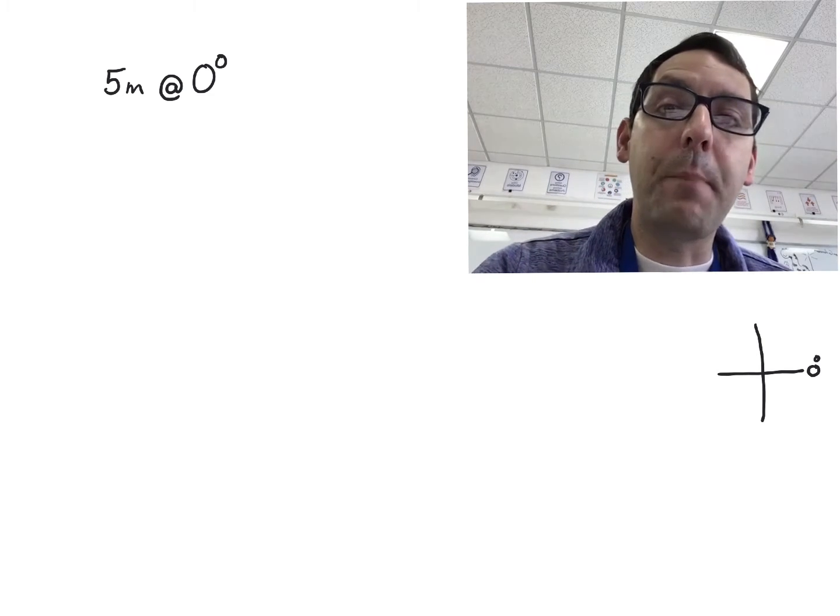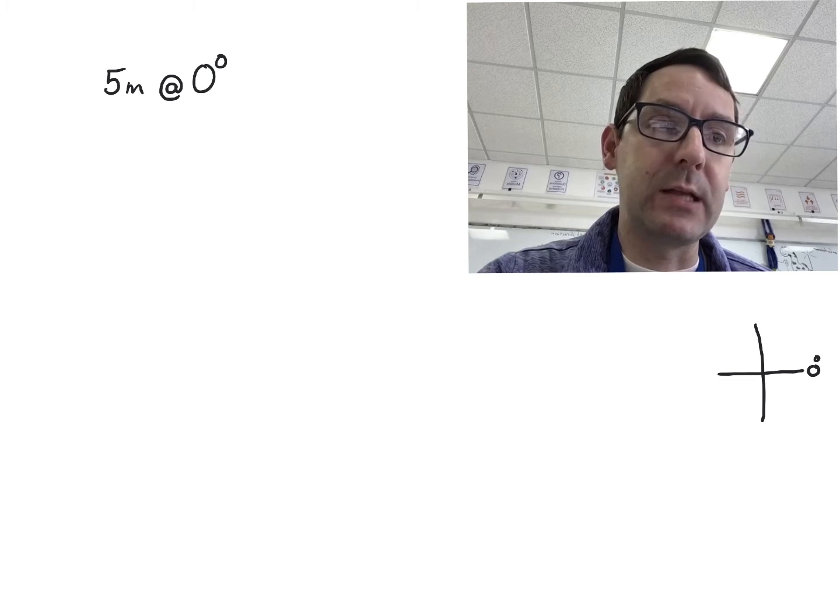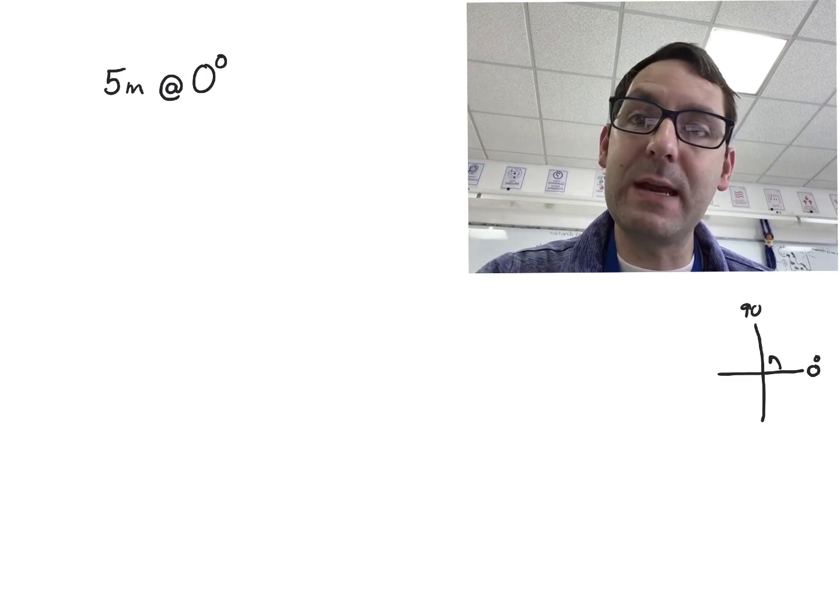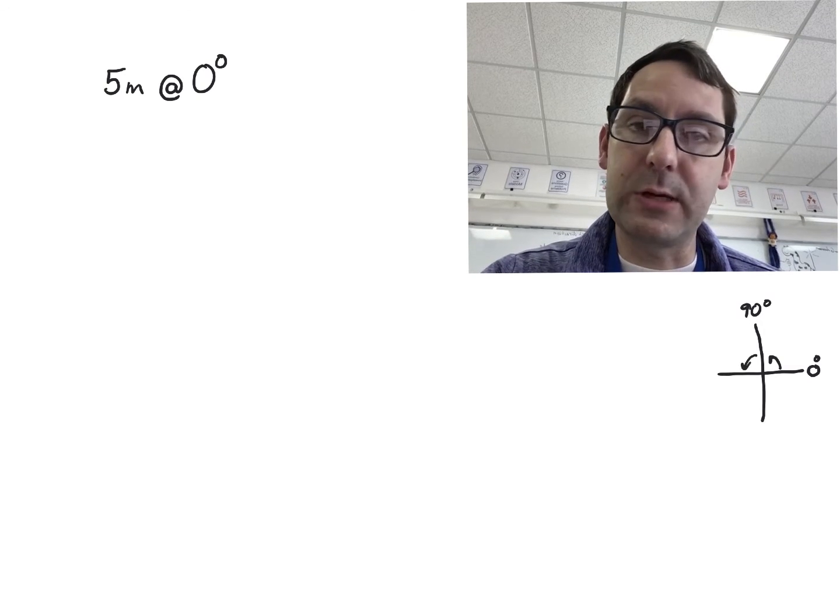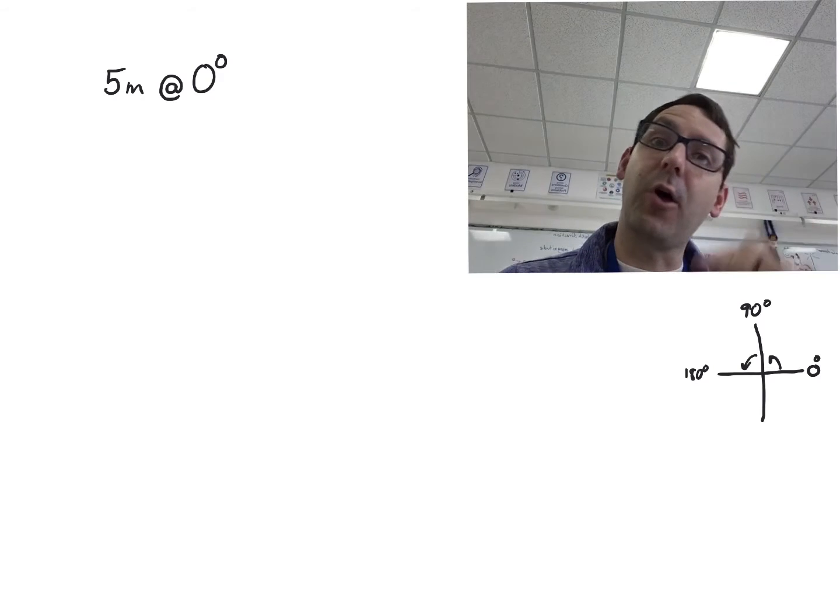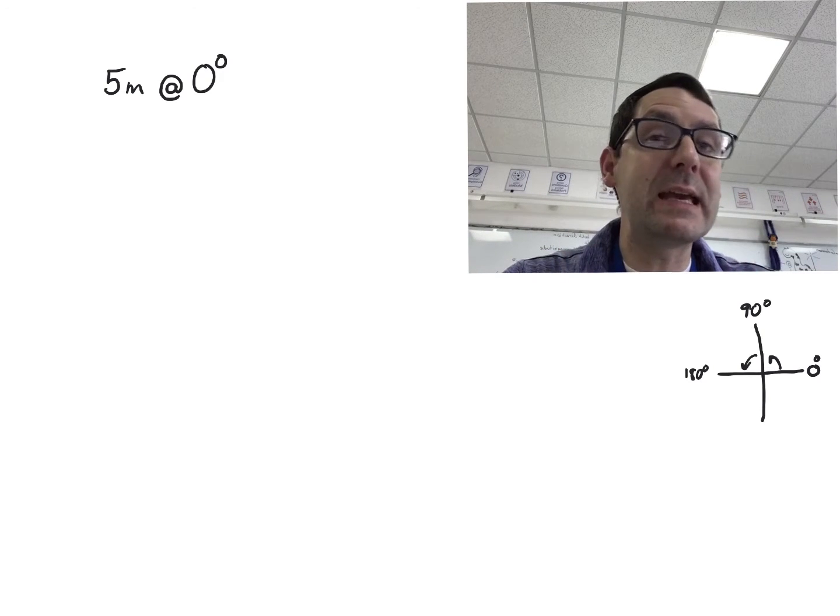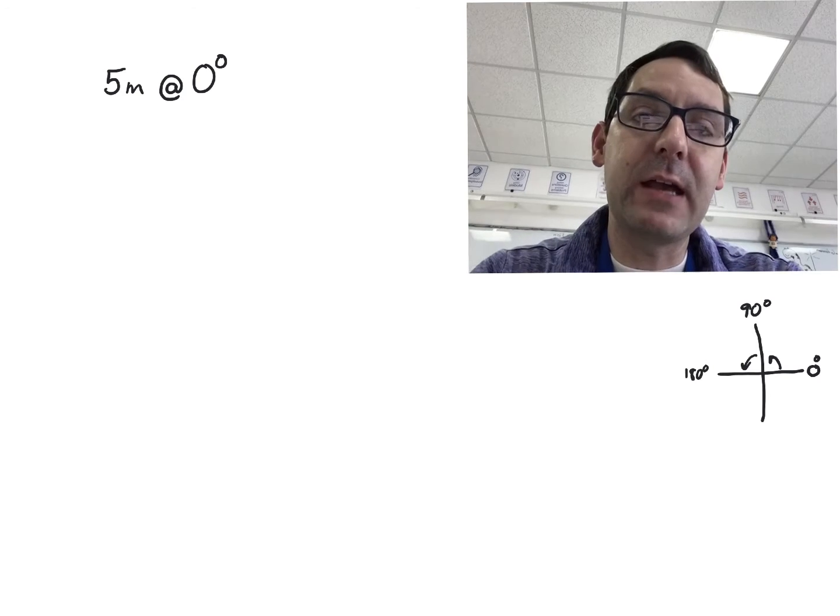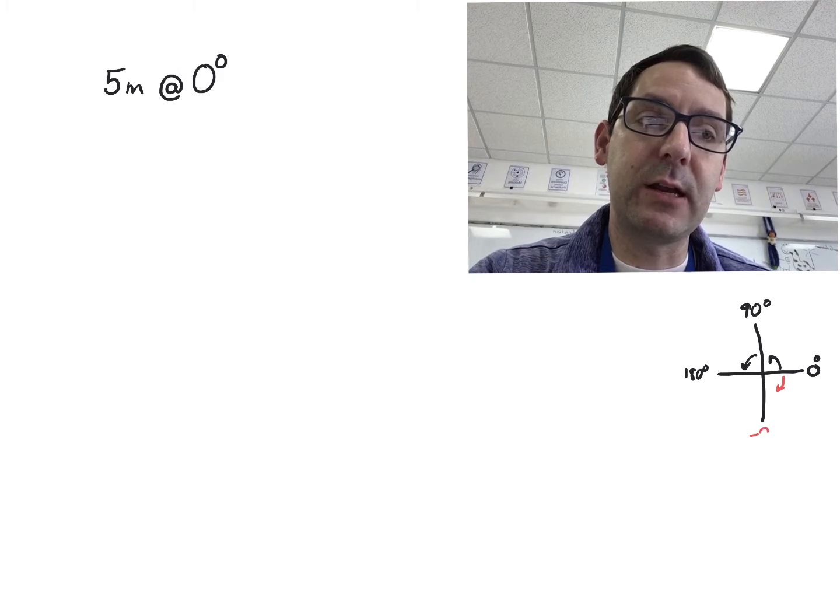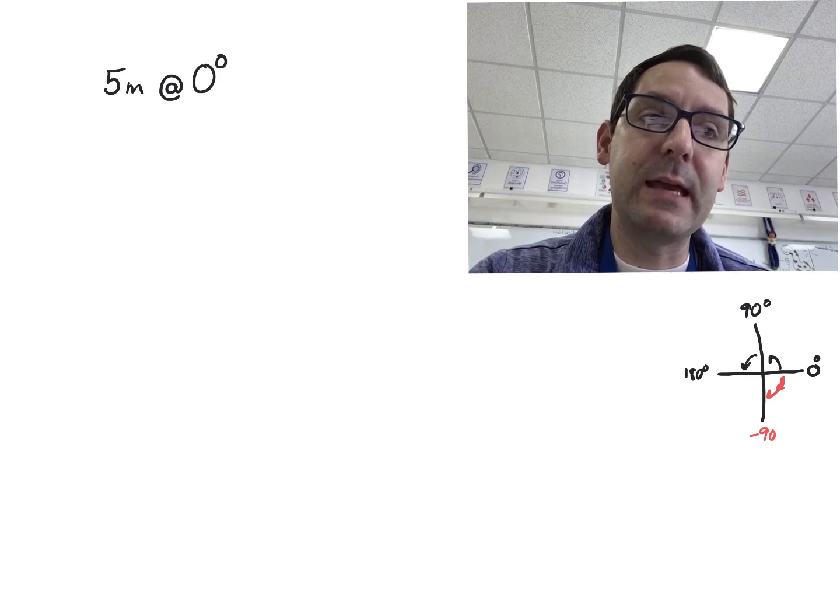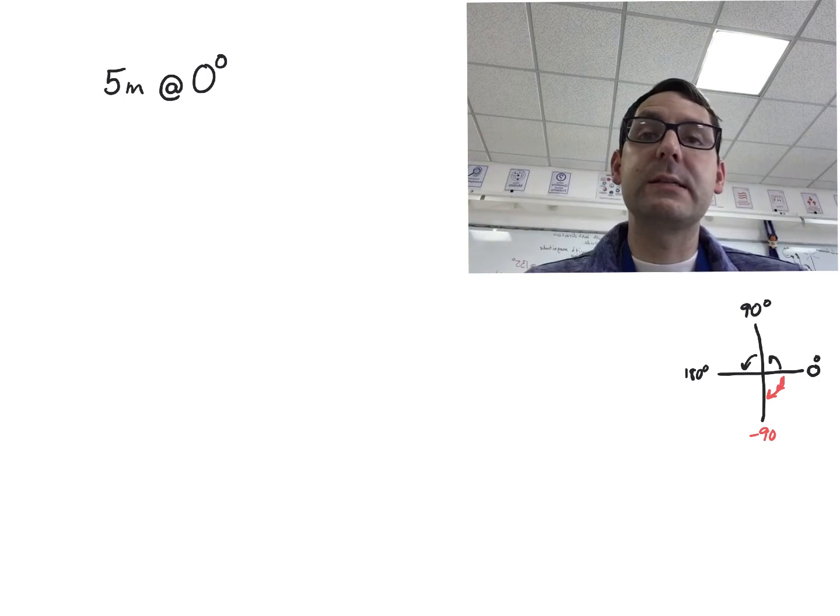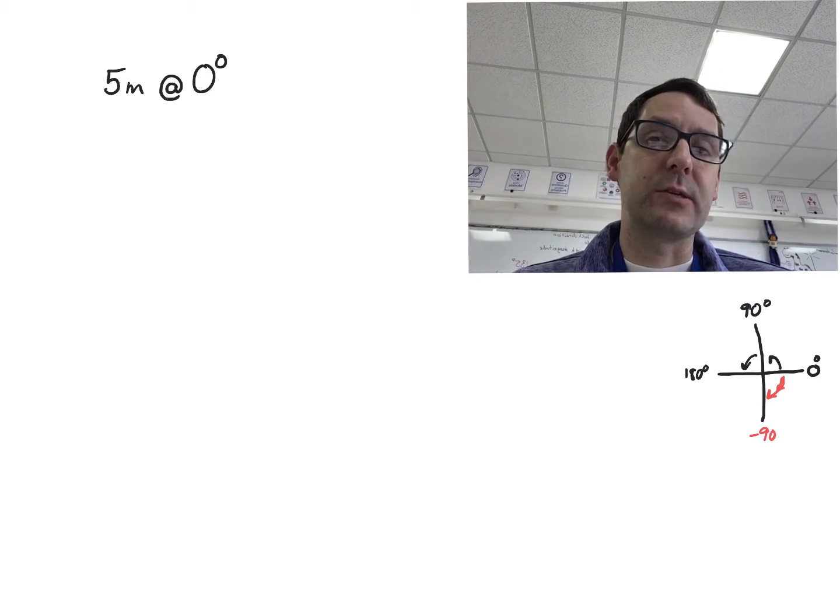From there, positive angles go clockwise. And so as we rotate around, straight up would be 90 degrees. Continue rotating around, this would be 180 degrees. And so on and so forth, all the way around the circle. If you were to do negative angles, negative angles are going to go the other direction. So a negative 90 degrees would take you down here. We still start at the same 0, but then we go 90 degrees in a clockwise direction.